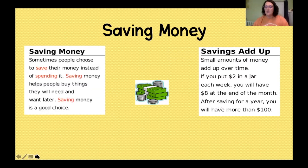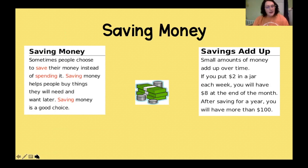Now let's talk about saving money. Sometimes people choose to save their money instead of spending it. Saving money helps people buy things they will need or want maybe later. Saving money is a good choice. Savings can add up — small amounts of money add up over time. If you put $2 in a jar each week, you will have $8 at the end of the month. After saving for a year, you will have more than $100.